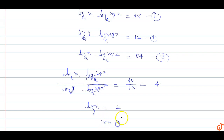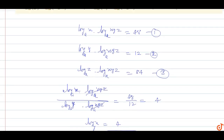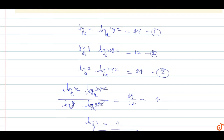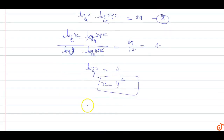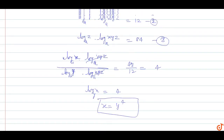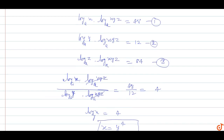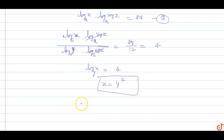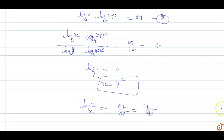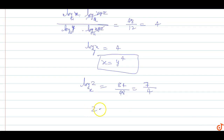Now divide equation 1 by equation 3. This gives log z base x equals 84 upon 48, which simplifies to 7 by 4. Therefore z equals x to the power 7 by 4.